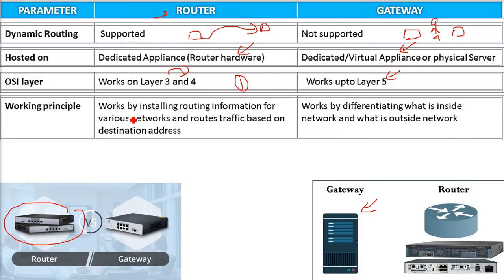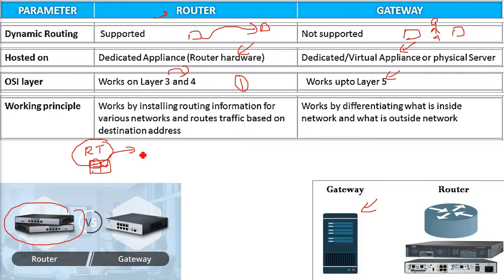The router's working principle is: it works by installing routing information for various networks and routes traffic based on destination address. It considers traffic, congestion, and flow, identifies the IP and MAC address, and depending upon the routing table, sends the packet via the best possible path.